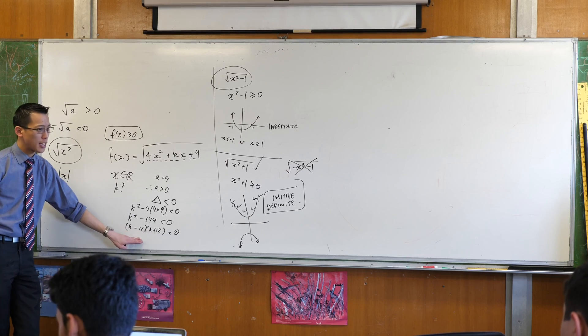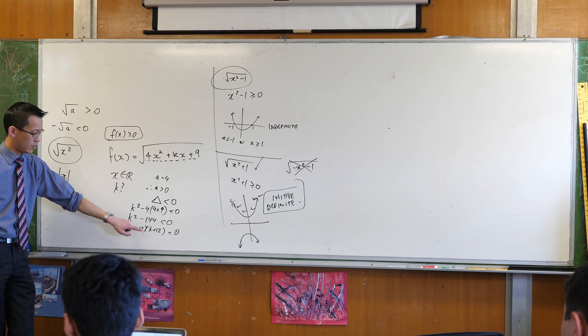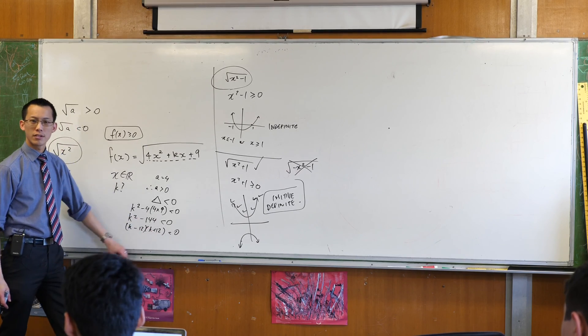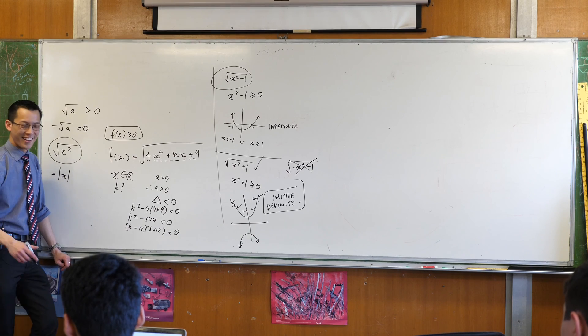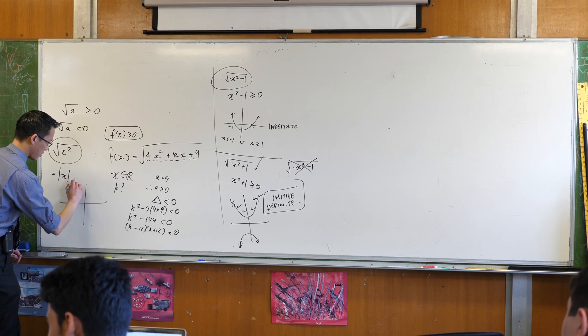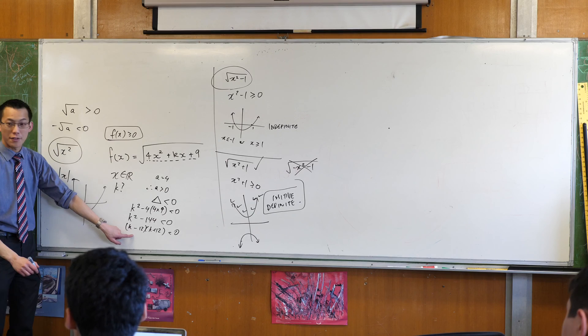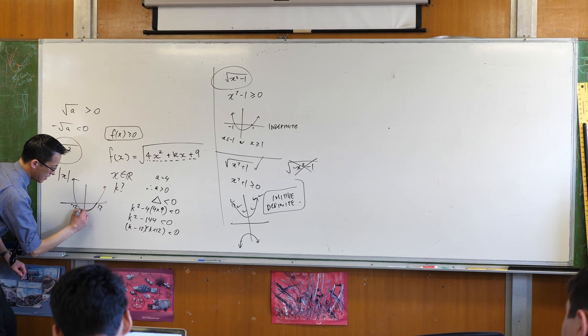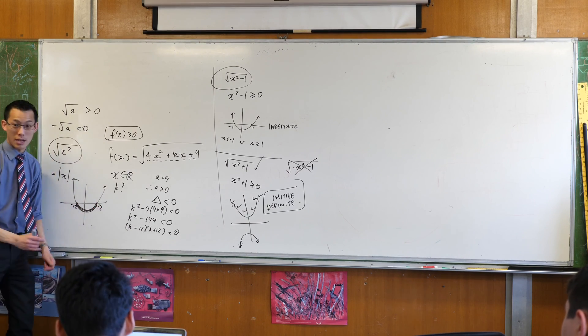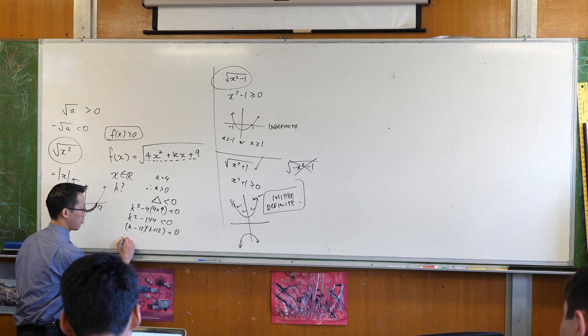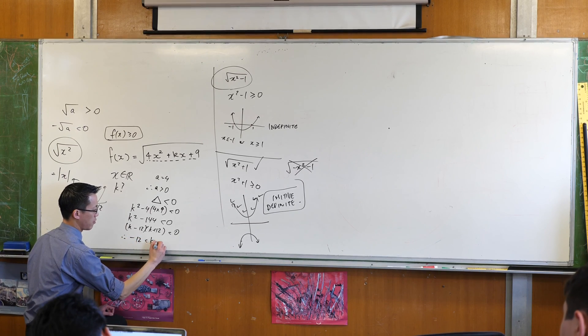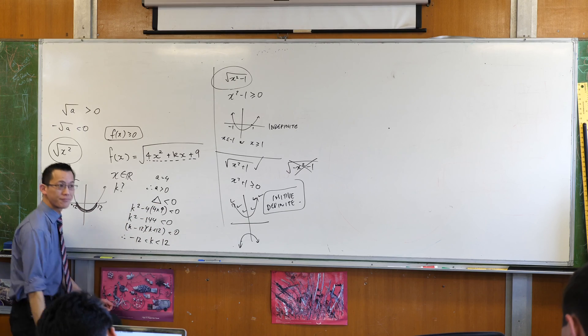So you tell me which values work? When is this, think about what it looks like, think about what it looks like. When is it negative? Very good, because this function here, this graph of k has -12, 12, and these are the good parts. These are the ones I'm interested in. So therefore, -12 to 12. Happy?